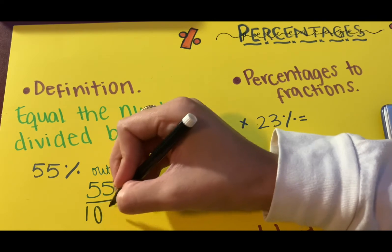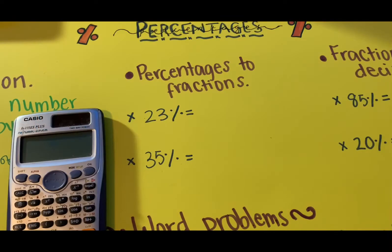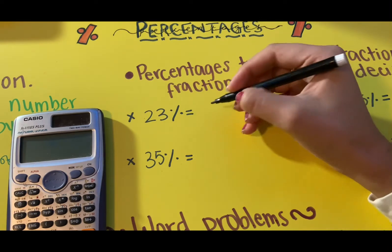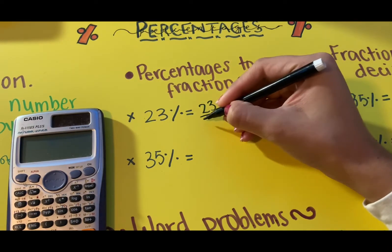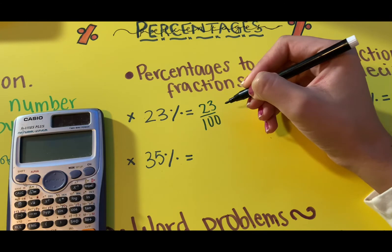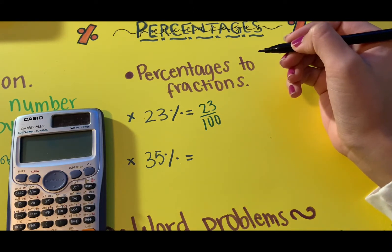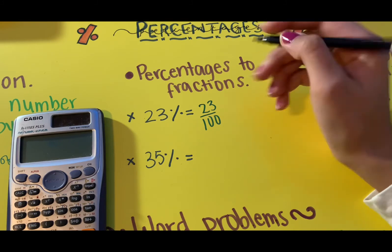Now when we want to convert percentages to fractions, the first thing is to use and apply the definition. So 23% means 23 out of 100, right? So you write it over 100. That's your fraction. There you go, as simple as that. Now sometimes they will want you to simplify it. In this case we can't simplify it further, so this is our answer.